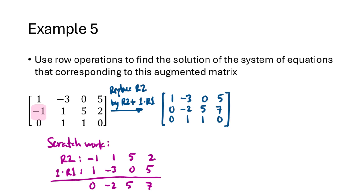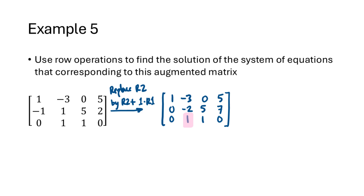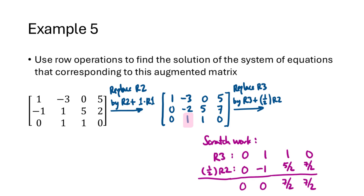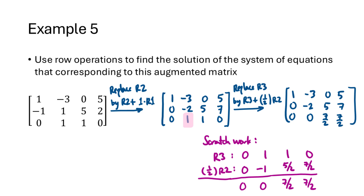Now our first column looks good — a single x1 in the first equation and no x1s elsewhere. Our new goal is to eliminate the x2s from the third equation. We multiply row 2 by one-half and add the result to row 3, which will turn that highlighted 1 into a 0. We're not permanently scaling row 2 — we're just temporarily doing that and immediately adding the result to row 3. We get a new row 3: 0, 0, 7/2, 7/2. Now we have a third row with only x3 in it, and our row operations are done.